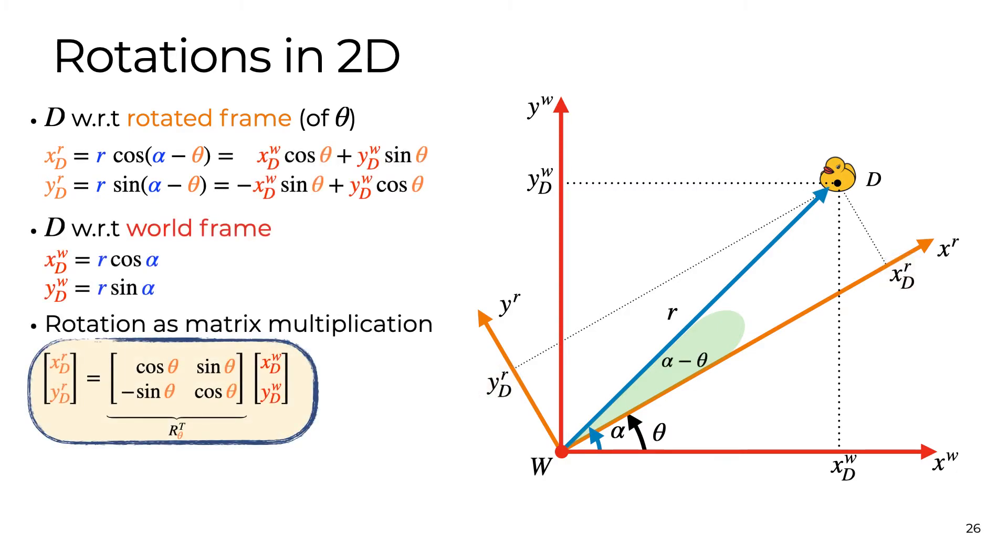Recalling trigonometry again and the expressions of the coordinates in the non-rotated frame, we obtain a compact expression relating the coordinates of D in the two frames. Note that this is a matrix multiplication operation. This matrix is famous, and it's called the rotation matrix.